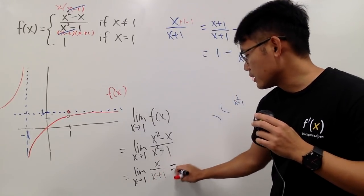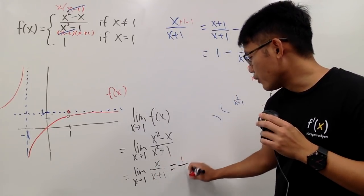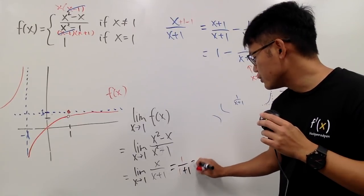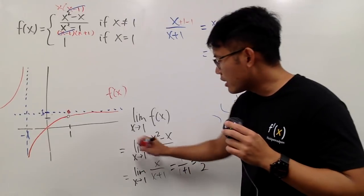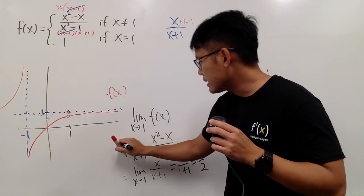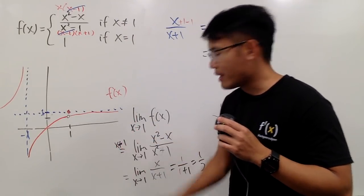And then in the end, you can just plug in 1 to all the x. 1 over 1 plus 1, which you get 1 half. And once again, this right here is for the situation when x is not exactly 1.